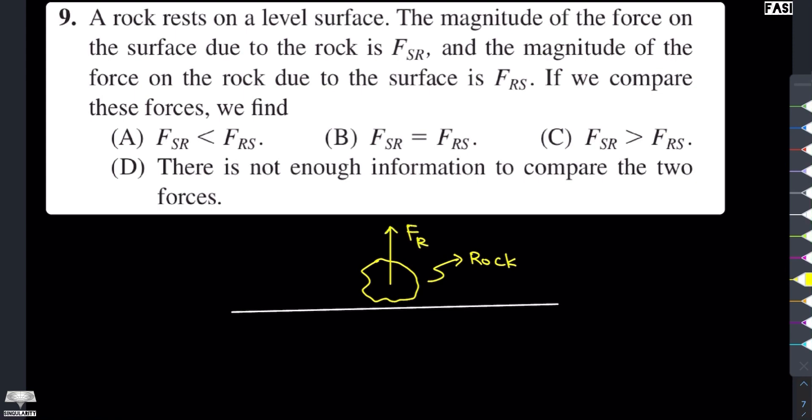اور اب rock بھی surface کے اوپر force لگاتی ہے اور وہ force جو ہے وہ downward direction میں لگتی ہے تو اس force کو ہم یوں represent کر سکتے ہیں کہ surface کے اوپر جو force لگ رہی ہے rock کی وجہ سے وہ downward direction میں ہے اور یہ ہے FSR